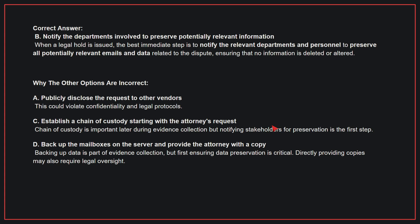Why the other options are incorrect: A — publicly disclose the request to the other vendors. This could violate confidentiality and legal protocols. C — establish a chain of custody starting with the attorney's request. Chain of custody is important later during evidence collection, but notifying stakeholders for preservation is the first step. D — back up the mailboxes on the server and provide the attorney with a copy. Backing up data is part of evidence collection, but first ensuring data preservation is critical. Directly providing copies may also require legal oversight. Therefore, the correct answer is B.